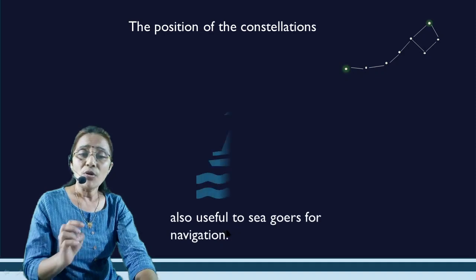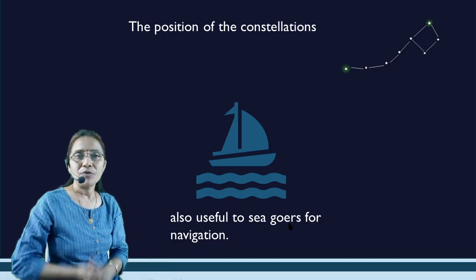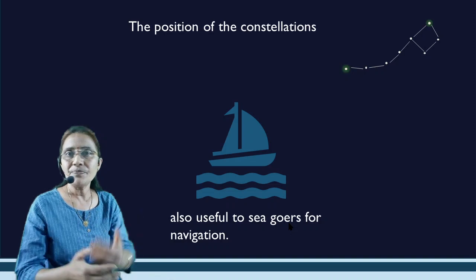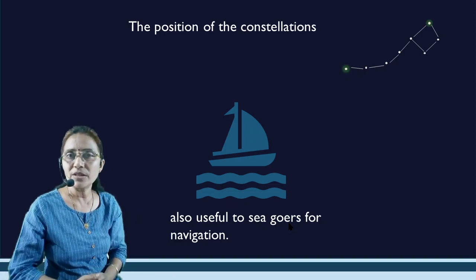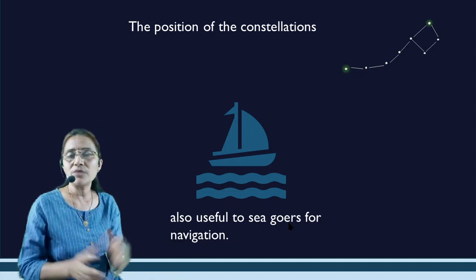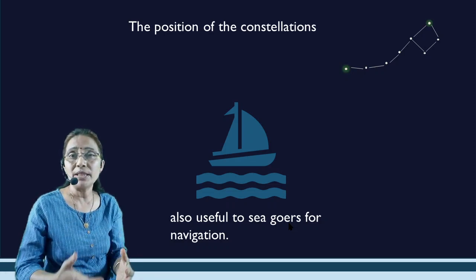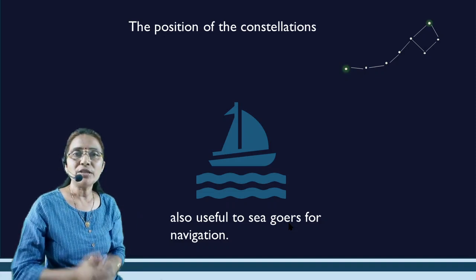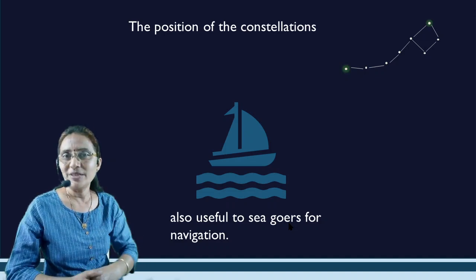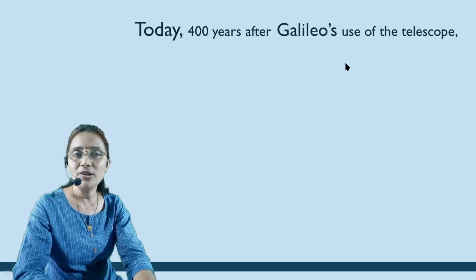The position of constellations was also useful for seagoers for navigation. First of all, there were no instruments for navigation, so the seasonal positions of stars were used. For example, in summer we can see certain star constellations. Today, we have different devices and equipment. Just as when we go to an unknown place today we turn on GPS to reach our destination, in the past there were no such tools. But 400 years ago, Galileo used the telescope, changing space observation forever.